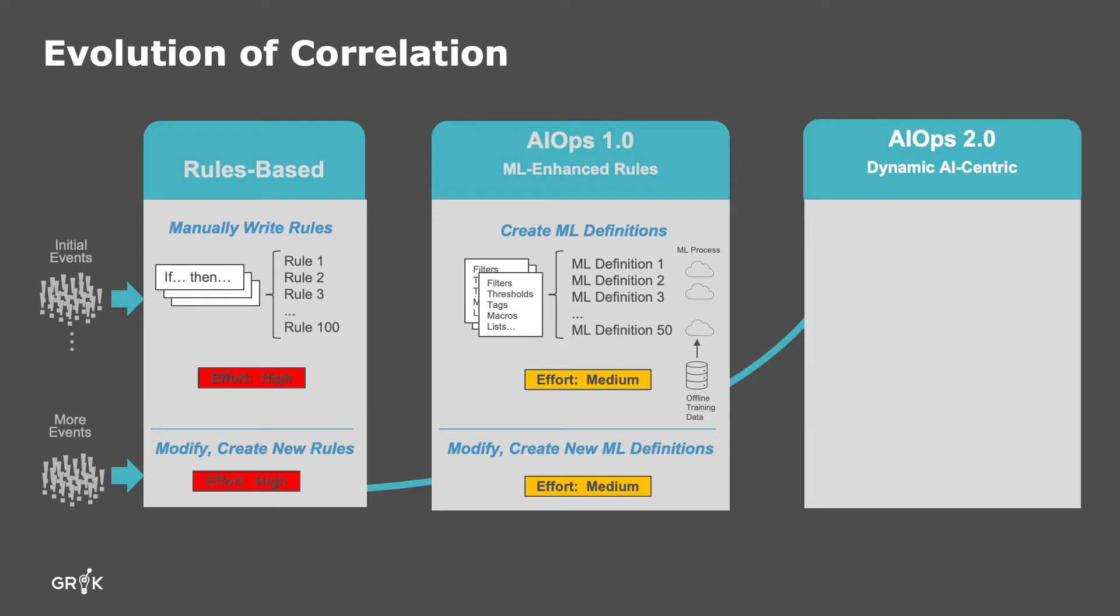However, this approach also fell short. The teams found they still had to create new rules so the system knows how to process and group similar events. These rules can go by different names like cookbooks or recipes, but they are essentially definitions for what events should be grouped together to enable the system to process them. In the end, this approach is also limited with a couple of basic algorithms on top of an unscalable set of rules and definitions that needed constant management and updating as the environment changed.